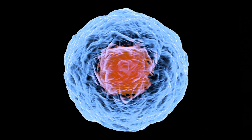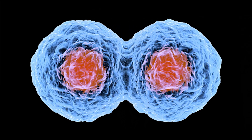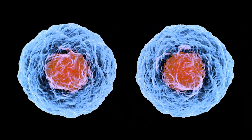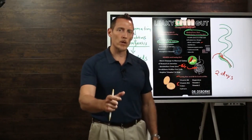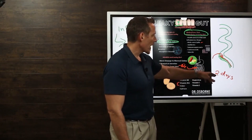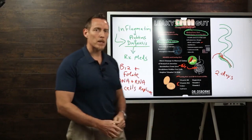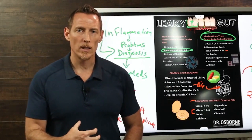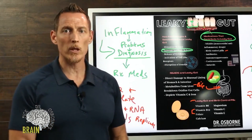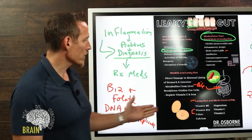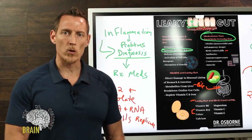If you have B12 and folate deficiency, that turnover rate slows down. Cells that are supposed to be replaced every two days to be fresh, vibrant, strong, and resilient are now taking longer to turn over. Think of two days for an intestinal cell as 90 years for a human life. If cells have to live three, four, or five days because there's not enough B12 and folate, your GI tract cells become old and lose their ability to properly function.